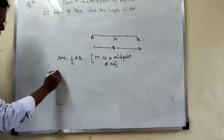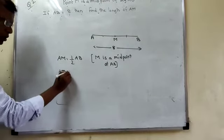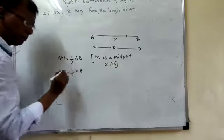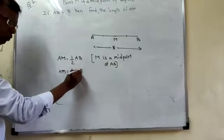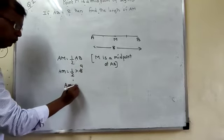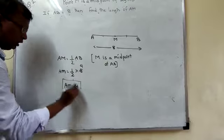Let's substitute the value. So AM is equal to half into, what is AB given? 8. Two ones are, two fours are. Therefore AM is equal to 4. This is one method.